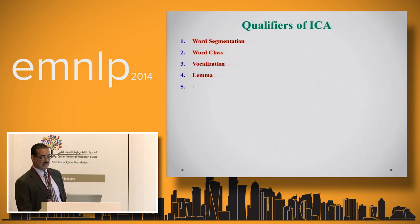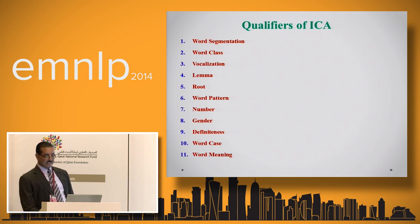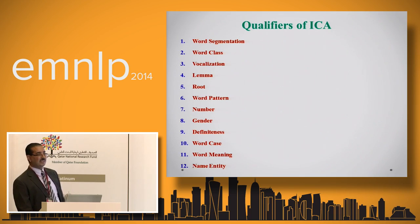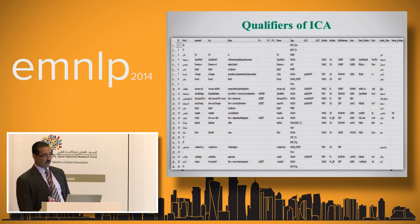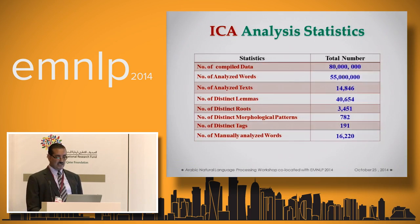The qualifiers of analysis include: word segmentation, word class, vocalization, lemma, root, word pattern, number, gender, definiteness, case, meaning, and identity information that can be inserted with every word inside the corpus. This is one of the results, and this is a screenshot of the database in which the whole corpus is analyzed. After analysis, we now have 55 million words analyzed and fully available for query over the website.